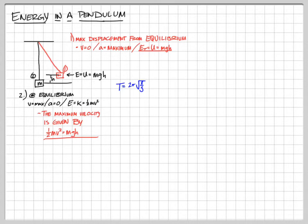For a pendulum, the only way we can get the period is T = 2π√(L/g), and the only things that change the period are the length of the pendulum and the acceleration due to gravity. You can change the mass or the amplitude — that doesn't matter. All that matters is the length of the pendulum.